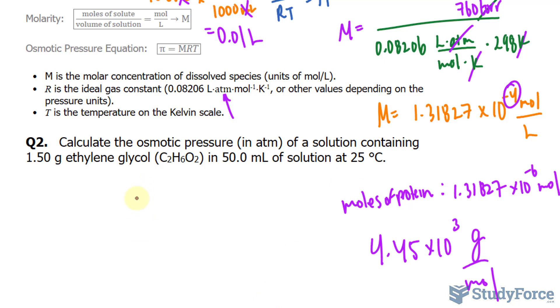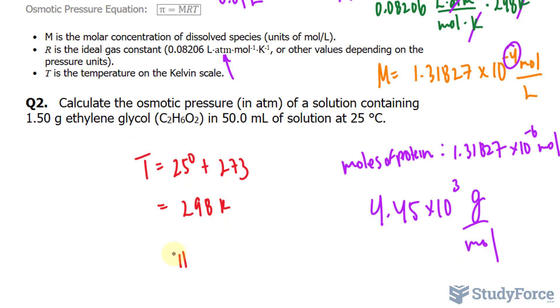So let's do that first. Let's find the temperature. We take 25 degrees Celsius and we add 273. This gives us 298 Kelvin. So we know T for this formula. I'll rewrite it over here.